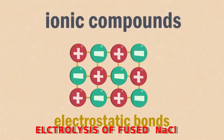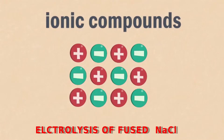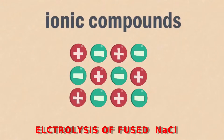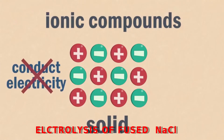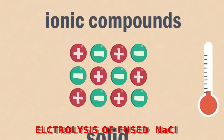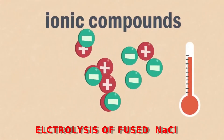Ionic compounds contain strong positive and negative ions. In the solid state, ionic compounds do not conduct electricity at normal temperature because the ions are held firmly. However, when we increase the temperature, the ionic bonding decreases in strength and the compound begins to conduct electricity as ions become free to move.